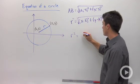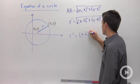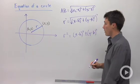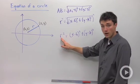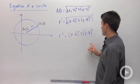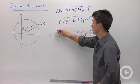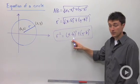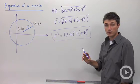So r squared is equal to (x - h) quantity squared, plus (y - k) quantity squared. So the equation of a circle with radius r is this equation right here, where h is the x coordinate of your center, and k is your y coordinate of your center.